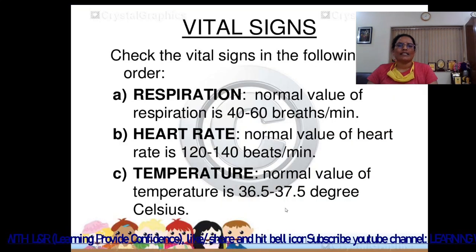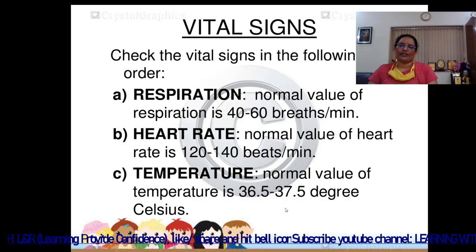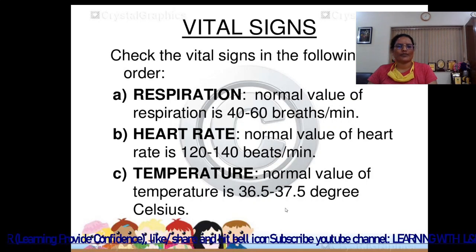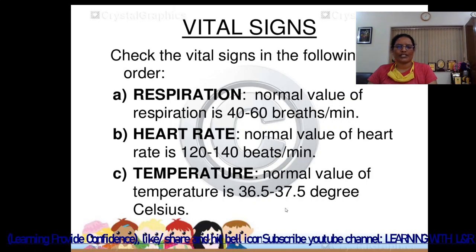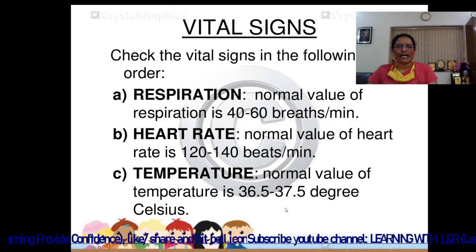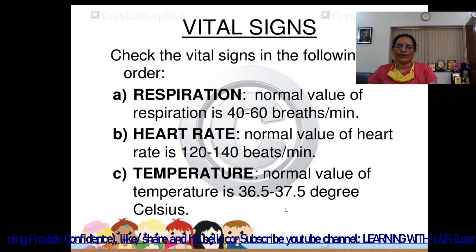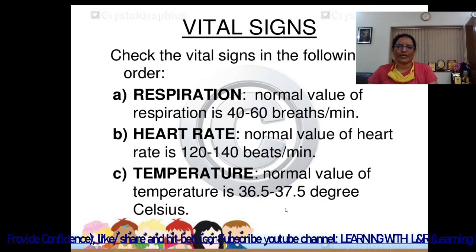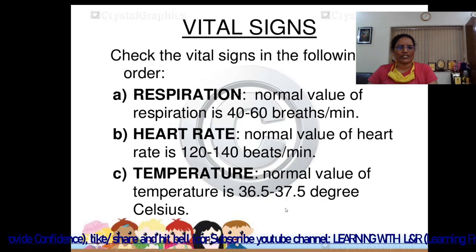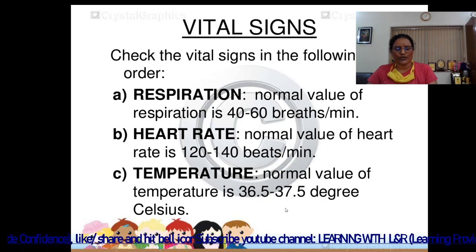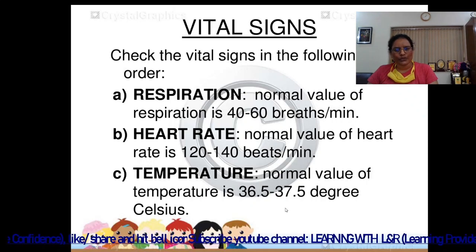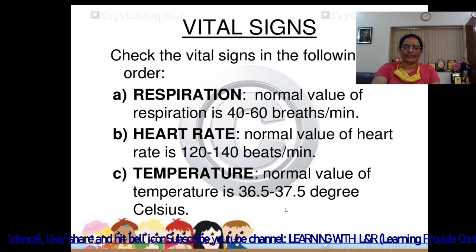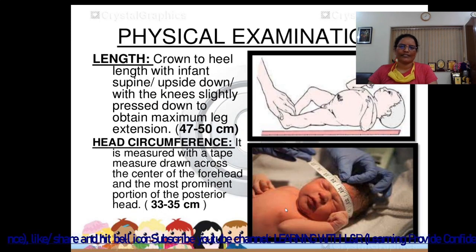Vital signs should be checked in the following order. First, respiration: the normal value is 40 to 60 breaths per minute. Second, heart rate: the normal value is 120 to 140 beats per minute. Third, temperature: the normal value is 36.5 to 37.5 degrees Celsius.